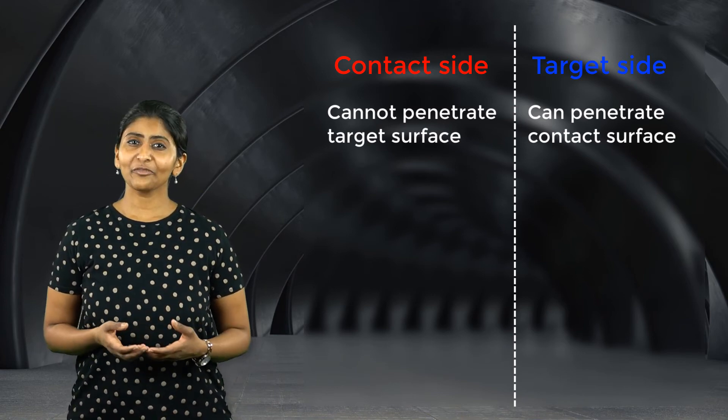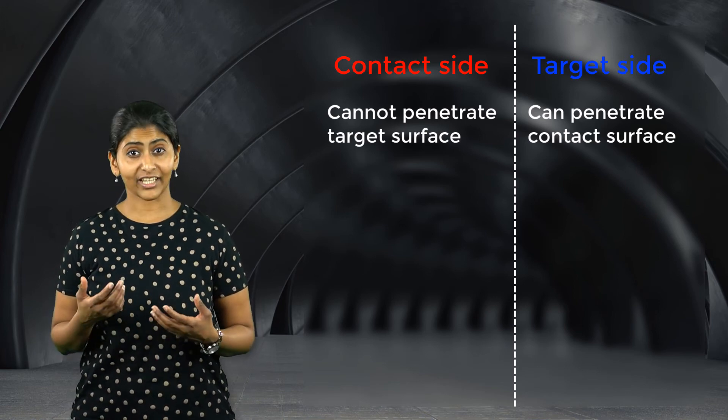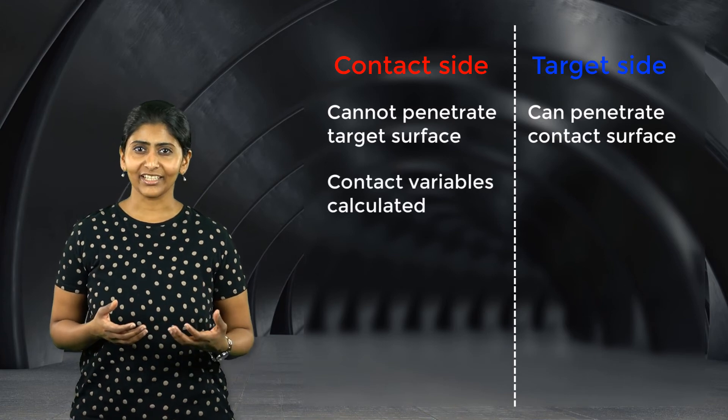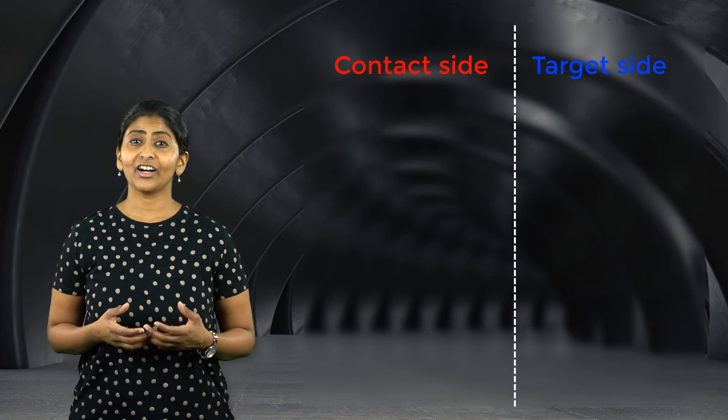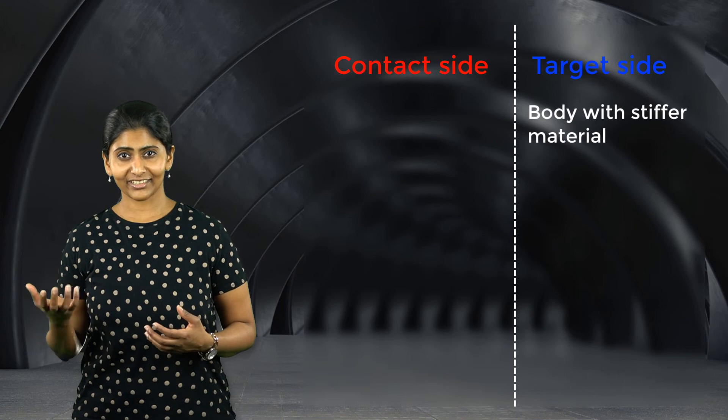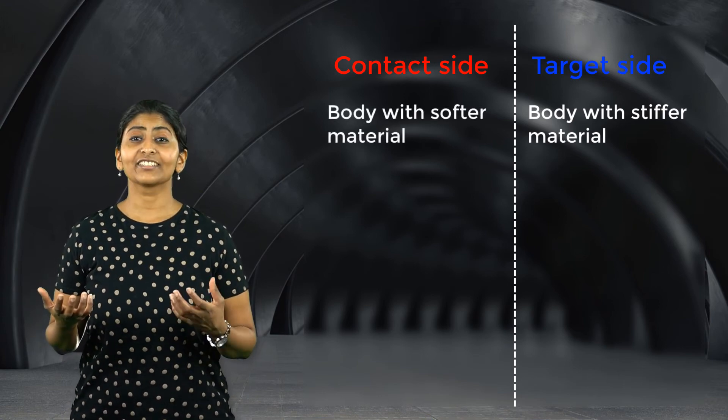Also, contact variables such as contact status, contact pressure, etc. are calculated only on the contact side and not the target side. The rule of thumb is to define the body with the stiffer material as the target side and the body with the softer material as the contact side.